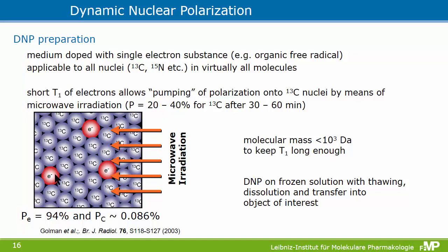For DNP, one works with a medium doped with a single-electron substance — for example, an organic free radical — frozen to low temperature where the electron polarization is decent. By applying microwave irradiation onto the frozen sample, you transfer the polarization from the electrons onto other nuclei that are close enough. A lot of these studies are done with C13, but it also works with other nuclei. Then you thaw the solution, remove or neutralize the radical, and inject it into the object of interest.